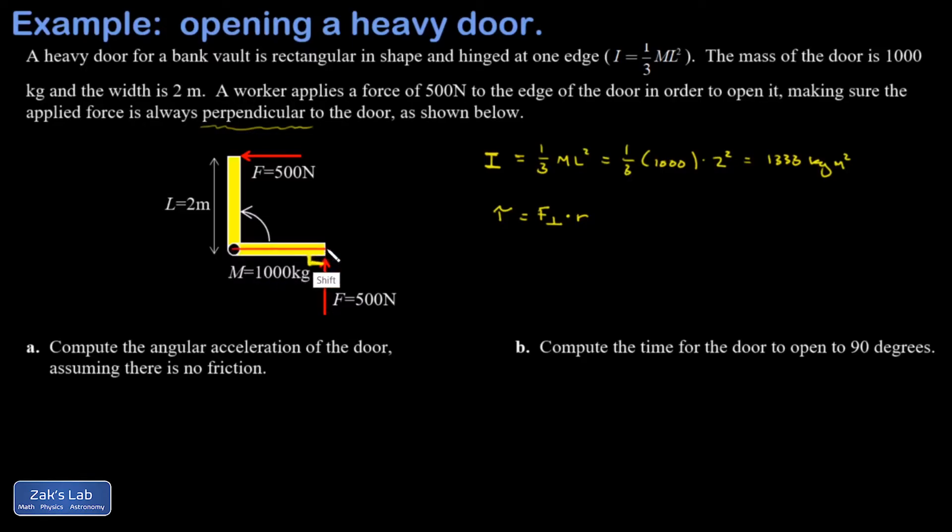That's just the width of the door, which is 2 meters in this case. My torque calculation comes out to 500 newtons times 2 meters, or 1,000 newton meters.